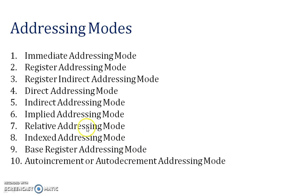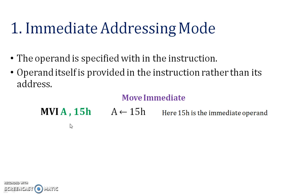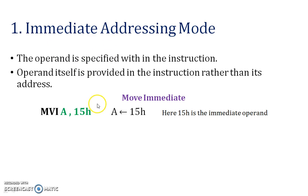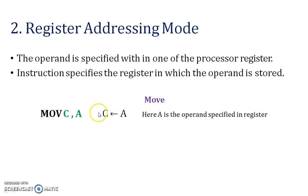First — immediate addressing mode. In immediate addressing mode, the direct value is stored into the register. Here you can see that 15 hex is the value or data; it is directly stored in the accumulator. So it is called immediate addressing mode.